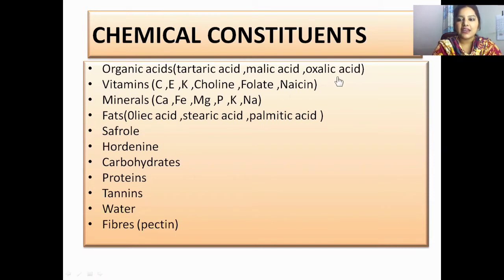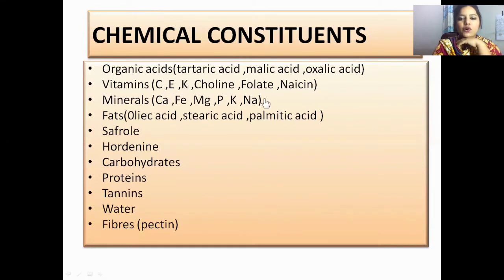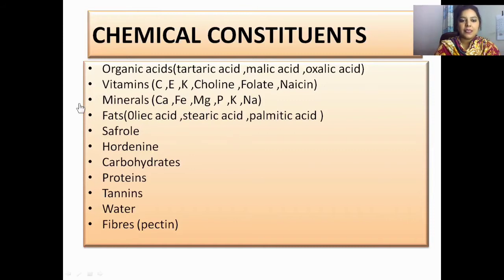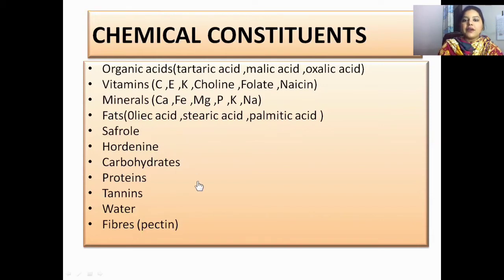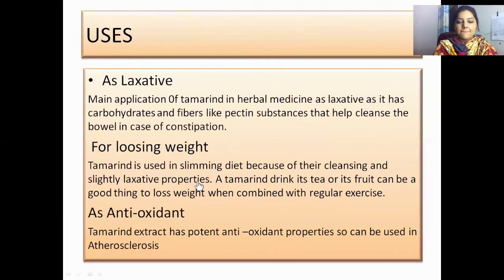The chemical constituents of Tamarindus indica are organic acids: tartaric acid, malic acid, and oxalic acid. Vitamins include choline, folate, and niacin. Minerals include calcium, phosphorus, magnesium, phosphate, potassium, and sodium. Fats include oleic acid, stearic acid, palmitic acid, and sitosterol. Also present are carbohydrates, proteins, tannins, water, and fibers such as pectin.